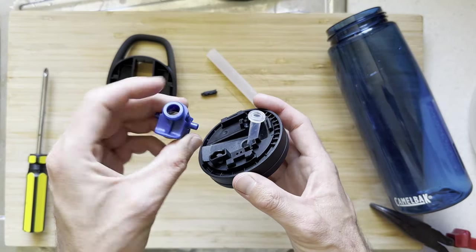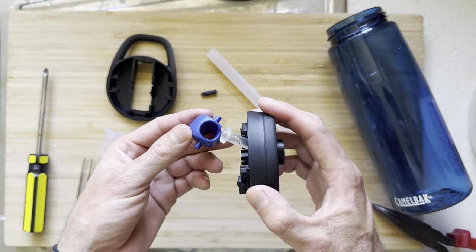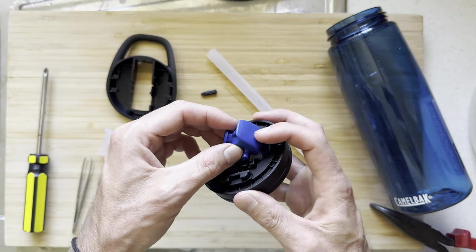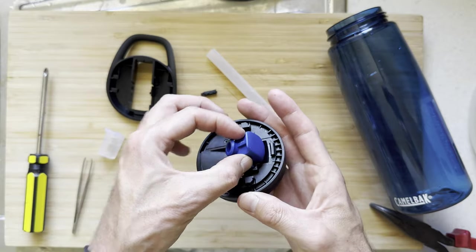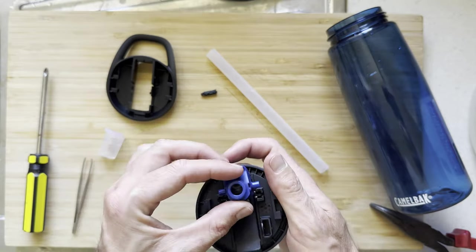Now the next bit—this is the hardest step in the whole process—is getting this through here. So what you want to do is actually feed it through the bottom, and you want the rounded bit here to be facing on the outside for when it clips in, but at the moment it doesn't really matter. We just need to get that rubber piece through.